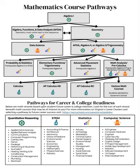We have identified four math strands based upon student future career and college interests. The four strands are quantitative reasoning, STEM, statistics, and computer science. Each strand has a corresponding icon. We have listed at the bottom of this chart the icons for each strand and a general listing of careers and college fields of study. Please be aware this is not an exhaustive list.